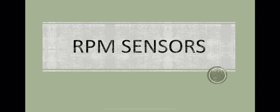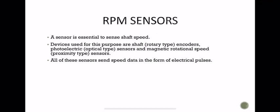In today's class we are going to discuss RPM sensors. A sensor is essential to sense shaft speed. RPM means revolution per minute — it is a measure of the frequency of rotation. Devices used for this purpose are shaft rotary type encoders, photoelectric optical type sensors, photoelectric tachometers, and magnetic rotational speed proximity type sensors. All these sensors send speed data in the form of electrical pulses, which we can count and convert to a digital value.